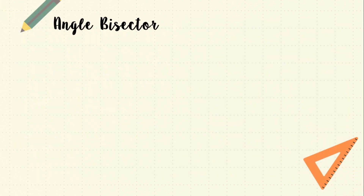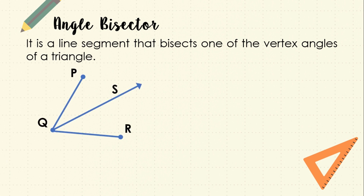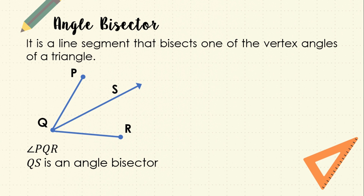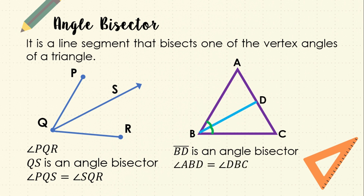An angle bisector is a line segment that bisects one of the vertex angles of a triangle. In our first illustration, QS is an angle bisector of angle PQR — it divides the angle into two equal parts, so angle PQS equals angle SQR. In triangle ABC, segment BD is an angle bisector. Since it bisects angle B, angle ABD is congruent to angle DBC, and adding these two angles gives angle ABC.